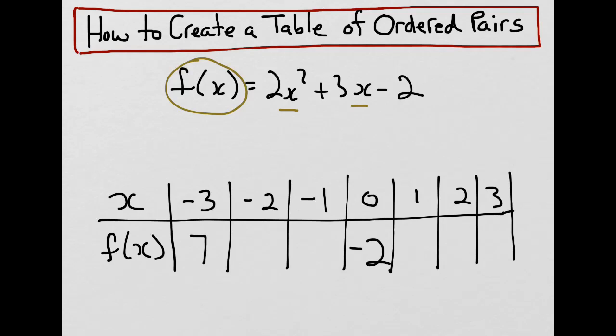We'd continue the process, and when we did so, we would find out that when x was minus 2, f would be 0. When x was minus 1, f would be minus 3. When x is 1, f will be 3. When x is 2, f will be 12. And when x is 3, f would be 25.